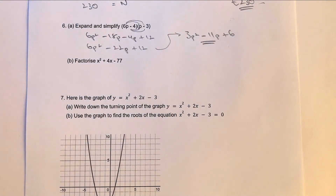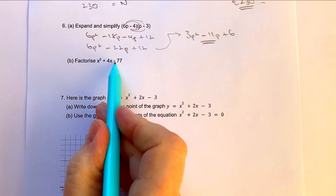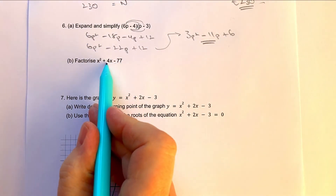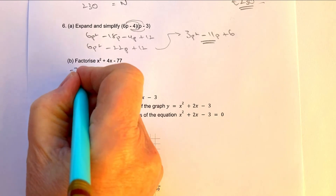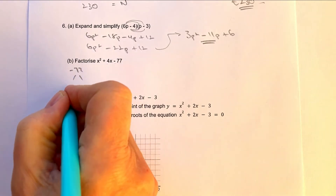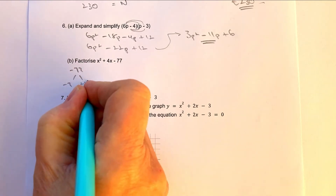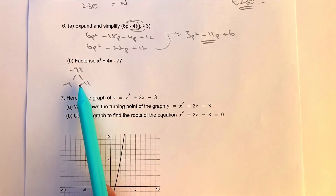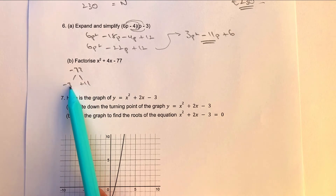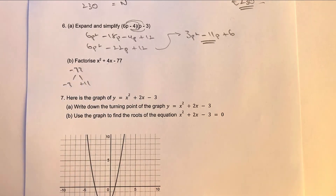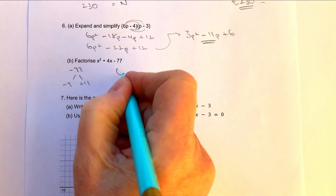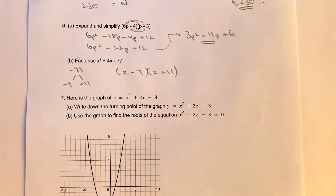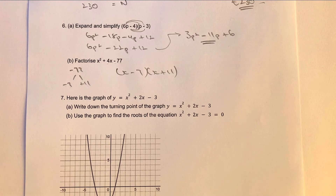For part B, we need two numbers that when multiplied together make minus 77, and when added together make plus 4. Those numbers are minus 7 and positive 11, because positive times negative is negative, and 11 take away 7 is 4. So the factorization is x minus 7 multiplied by x plus 11.